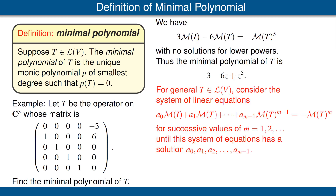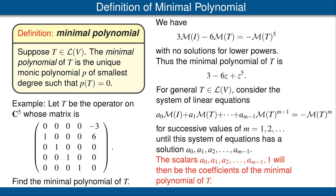In general, there's a fast algorithm for finding the minimal polynomial of any operator. Suppose you have an operator T on V. Choose a basis of V so that you can work with matrices, and look at the system of linear equations shown here. This is really n squared equations, and we have unknowns a₀ up to a_{m−1}. You can apply Gaussian elimination — which is very fast on a computer — to see whether there are any solutions. Stop as soon as you get a solution. That is how you find the minimal polynomial.